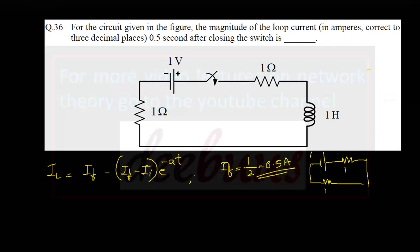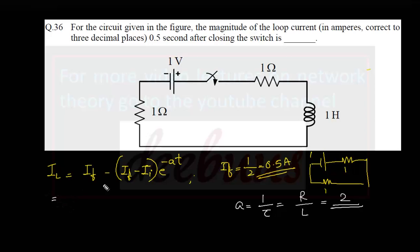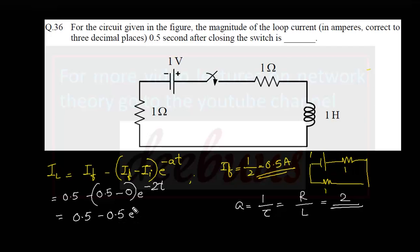The final current is 0.5 ampere. Now we calculate A = R/L (since for an RL circuit, time constant = L/R, so A = 1/τ = R/L). Here R = 1 + 1 = 2 ohm and L = 1 H, so A = 2. Substituting all values: IL = 0.5 minus (0.5 minus I_initial) × e^(−2 × 0.5), and we evaluate this expression to find the loop current at t = 0.5 seconds.